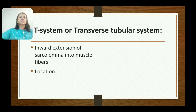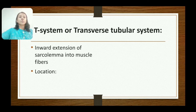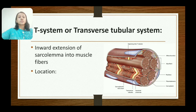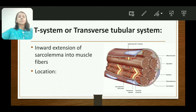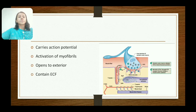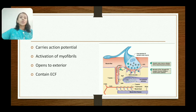The T-system, or transverse tubular system: T-tubules are inwardly directed extensions of the sarcolemma into the muscle fiber, present at the junction between the A and I band. Therefore, each sarcomere has two T-tubules. These are the T-tubules visible in the diagram as the yellow structures. The invagination of the sarcolemma is present at the A-I junction and carries action potential into the interior of the muscle fiber.